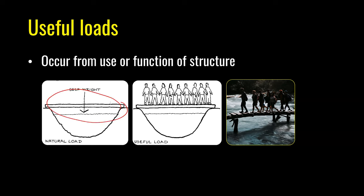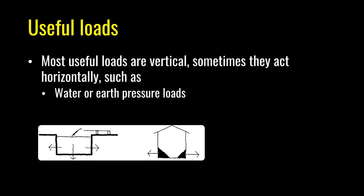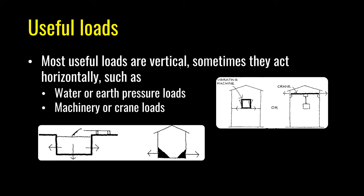Useful loads result from the use or function of a structure. Consider a wooden plank spanning the banks of a river — its self-weight is a natural load, while people crossing are a useful load. Most occupancy loads — people in hospitals, houses, libraries, or universities — are classed as useful loads and are mainly vertical. However, when structures store sand, grain, or water they cause useful earth or water pressure, and machinery can shake a building sideways, creating a useful horizontal load.